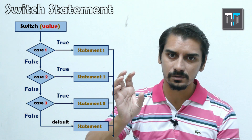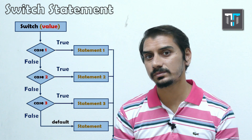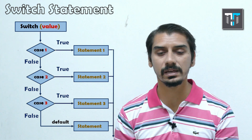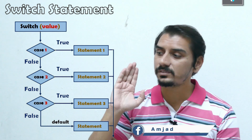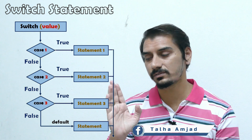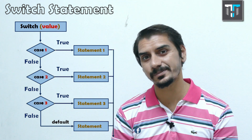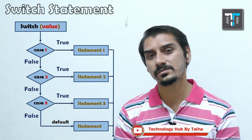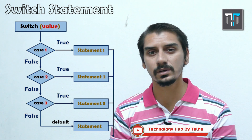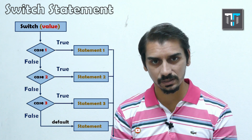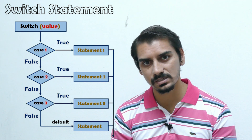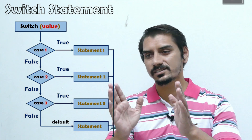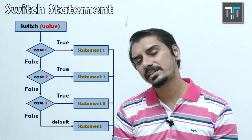To summarize the flow: if the value equals one, move to case 1 and display statement one; if the value equals two, move to case 2 and display statement two; if the value equals three, move to case 3 and display statement three; and if the value is something other than one, two, or three, move to the default side and display another statement.